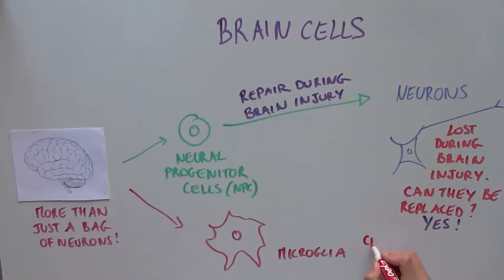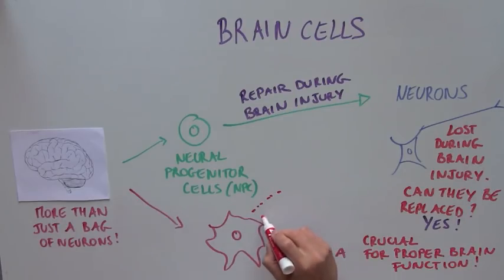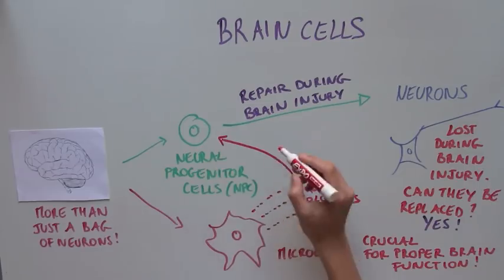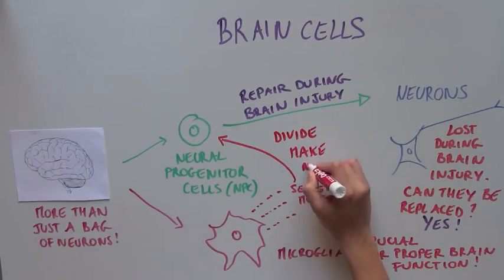Microglia are very important, and in fact crucial, for the proper functioning of the brain. This is in part because they produce molecules, or secreted molecules, that are going to travel to nearby NPCs and tell them what to do, such as divide and make neurons.